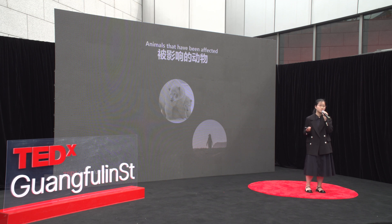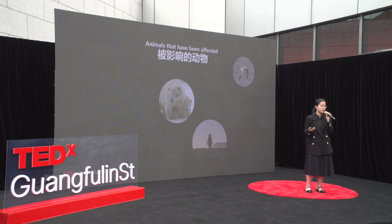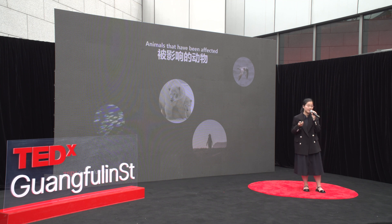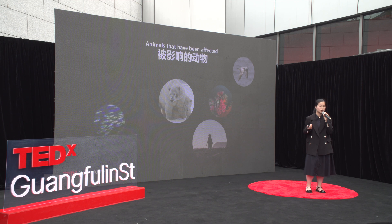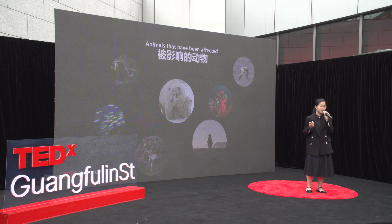Many other species of animals are being affected as well. For example, some species of birds are migrating earlier or later due to changes in temperature and weather patterns, and some species of fish are also being affected, which can lead to a decline in population. The loss of coral reefs is also affecting the survival of many marine species. Other land animals, like elephants and reindeer, are being affected by changes in their natural habitats and food resources.